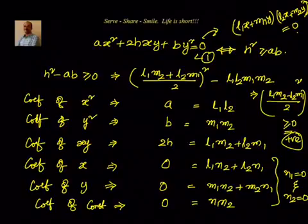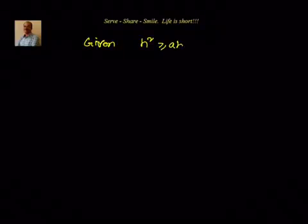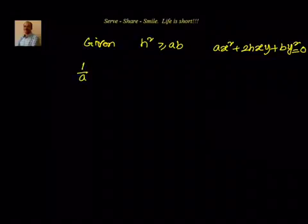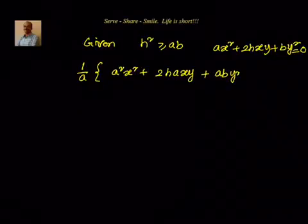Now let's go to the other side of the proof, where we are given h² ≥ ab and we have to represent ax² + 2hxy + by² = 0 as a pair of straight lines. We will take that equation and multiply through by A, so that we get A²x², allowing us to write it as (Ax)². This gives (1/A)(A²x² + 2HAxy + ABy²) = 0. We are considering Case 1 where A ≠ 0.